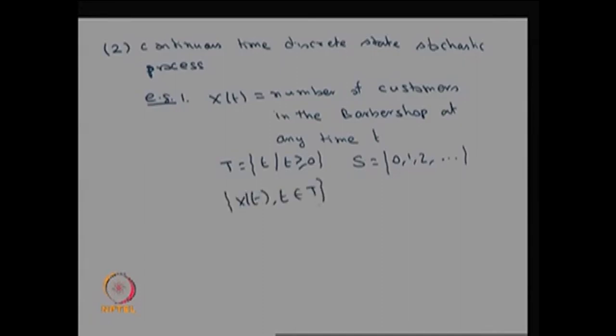This is a real valued stochastic process of one-dimensional type, and for each t it is a random variable. Since t belongs to a set with uncountably many values, it is a continuous parameter. Therefore, this is also called a continuous parameter discrete state stochastic process.